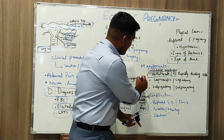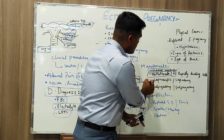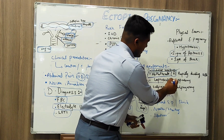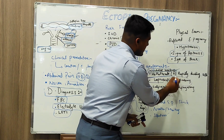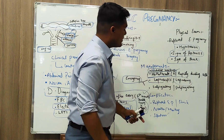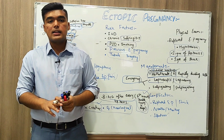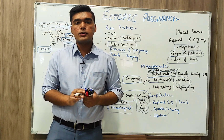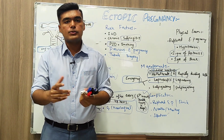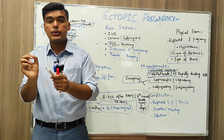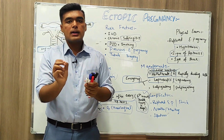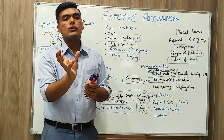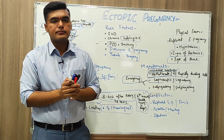In case of emergency management, laparoscopy is performed — laparotomy is preferred. Salpingectomy is the complete removal of the fallopian tube, while salpingostomy is removal of part of the fallopian tube. These are the surgical approaches to managing ectopic pregnancy.